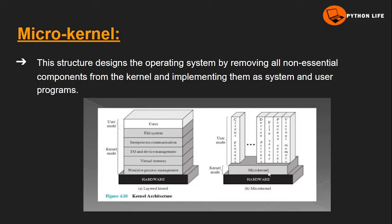The micro kernel provides communication between the client program and system services. They communicate with each other directly using message passing. However, a disadvantage of the micro kernel is that using message passing can reduce system performance. This is the main drawback of the micro kernel structure.